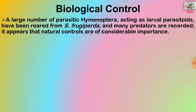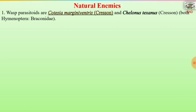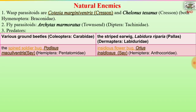Biological control: a large number of parasitic Hymenoptera acting as larval parasitoids have been reared from Spodoptera frugiperda and many predators are recorded. Natural controls are of considerable importance. Natural levels of larval parasitism are often very high — 20-70%, mostly by Braconid wasps. Some 10-15% of larvae are often killed by pathogens. Natural enemies include wasp parasitoids such as Cotesia marginiventris and Chelonus texanus, fly parasitoids such as Archytas marmoratus, and predators like various ground beetles, striped earwig, spined soldier bug and Orius insidiosus flower bug.